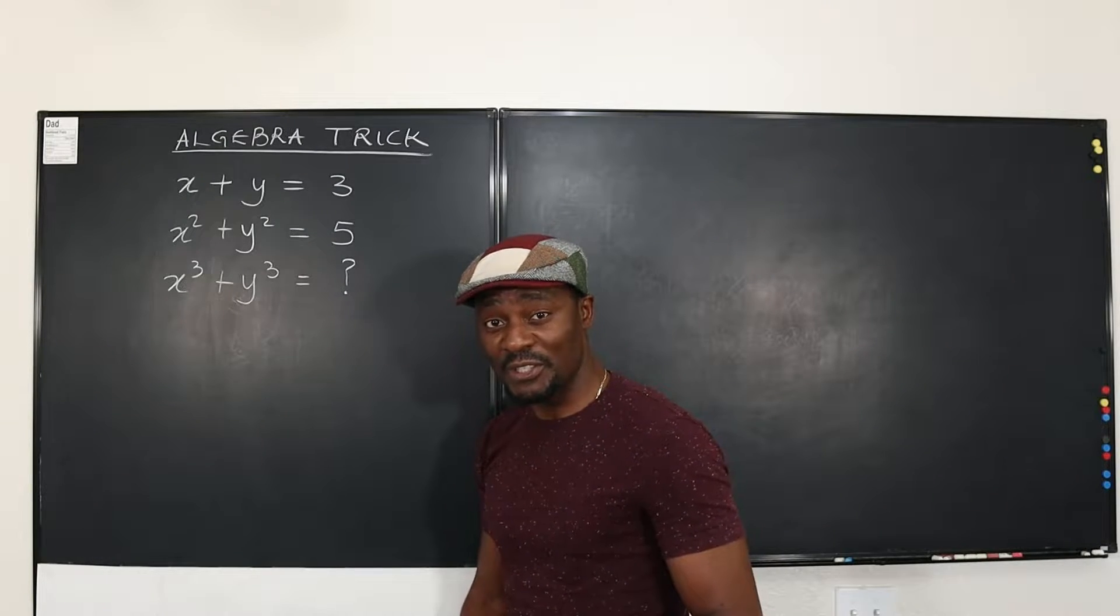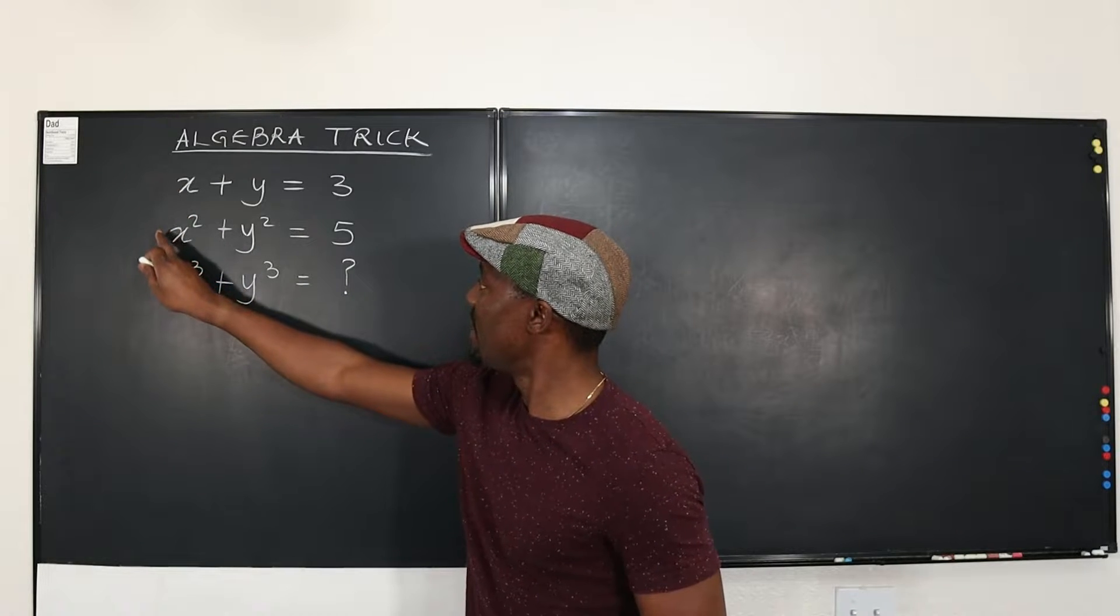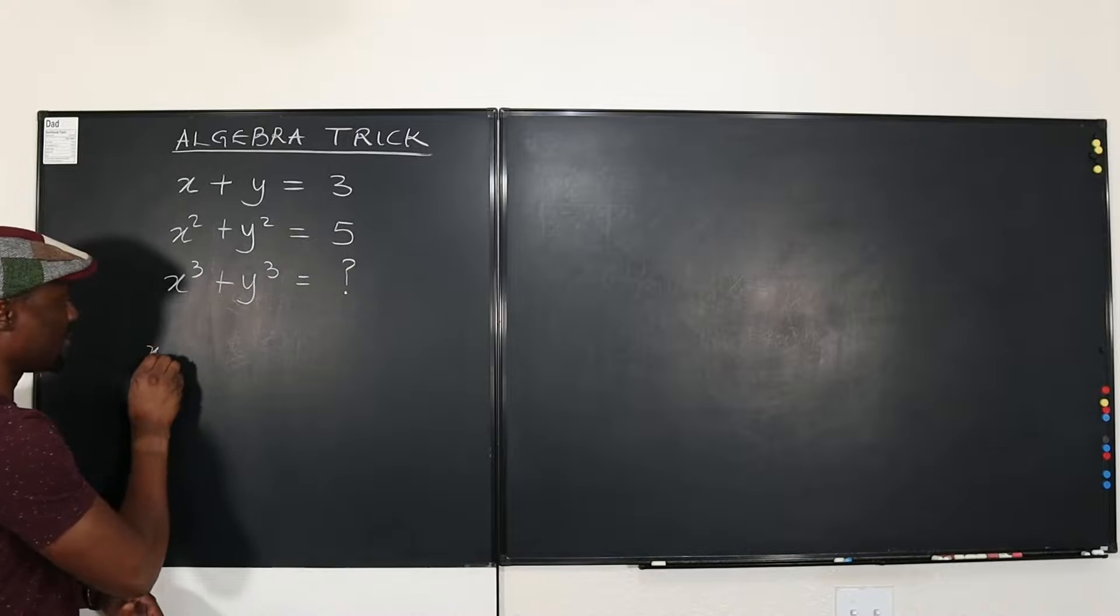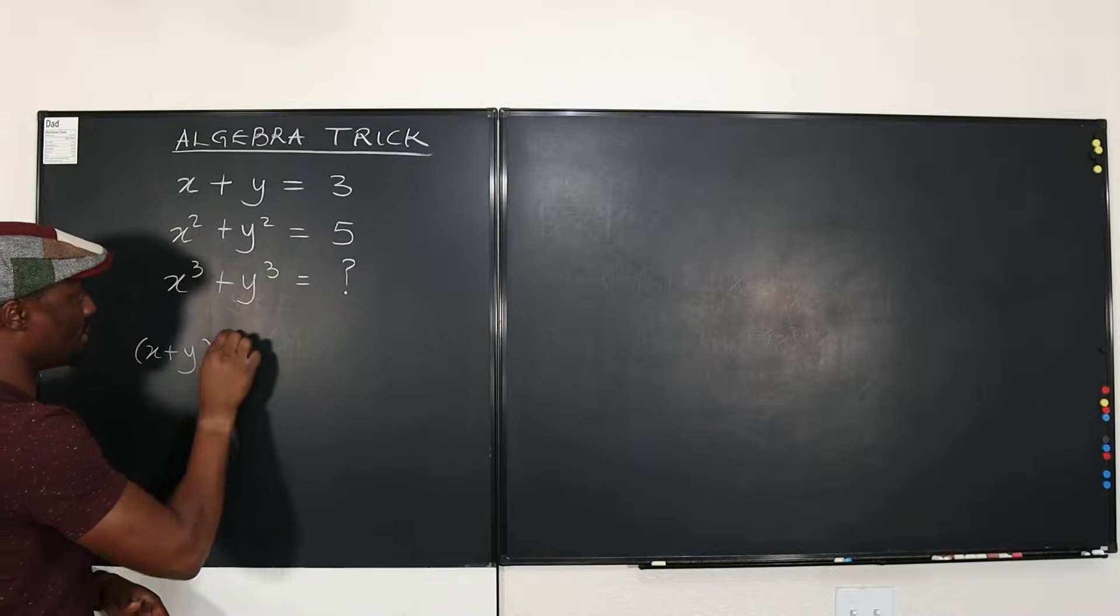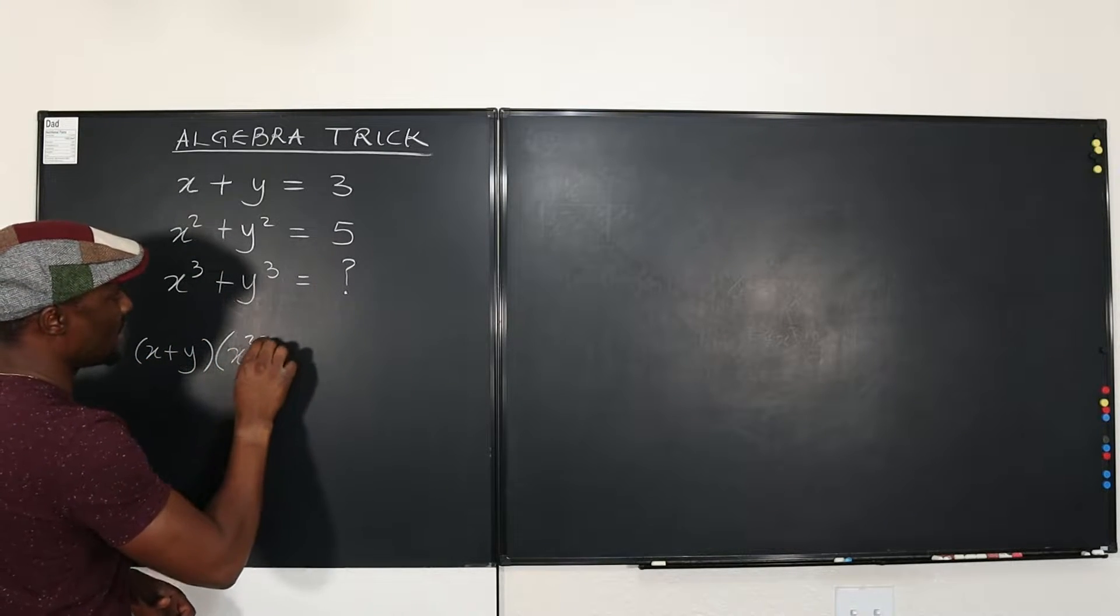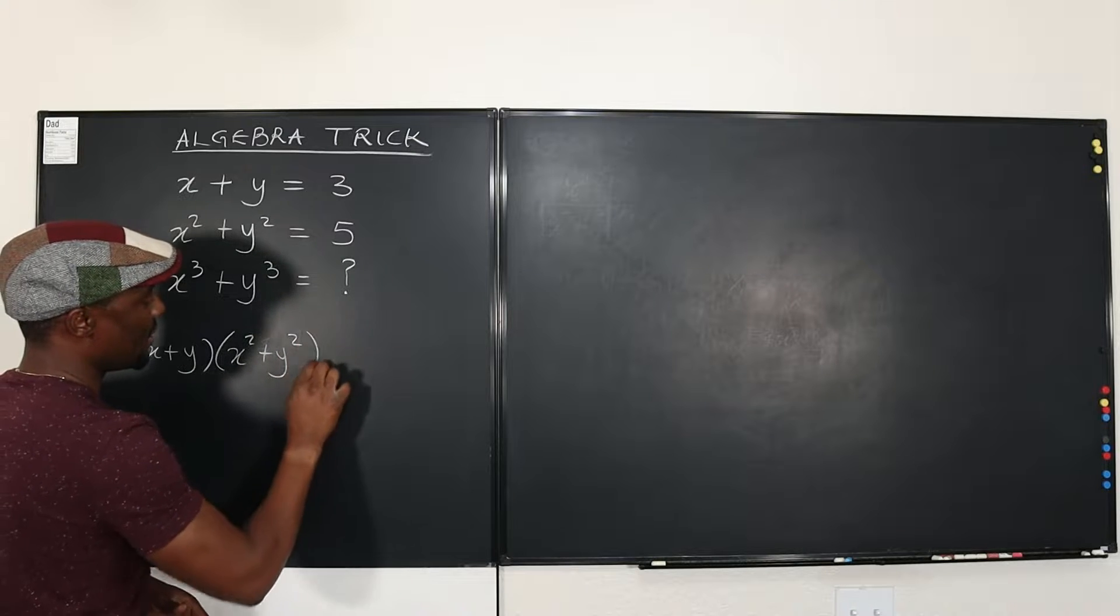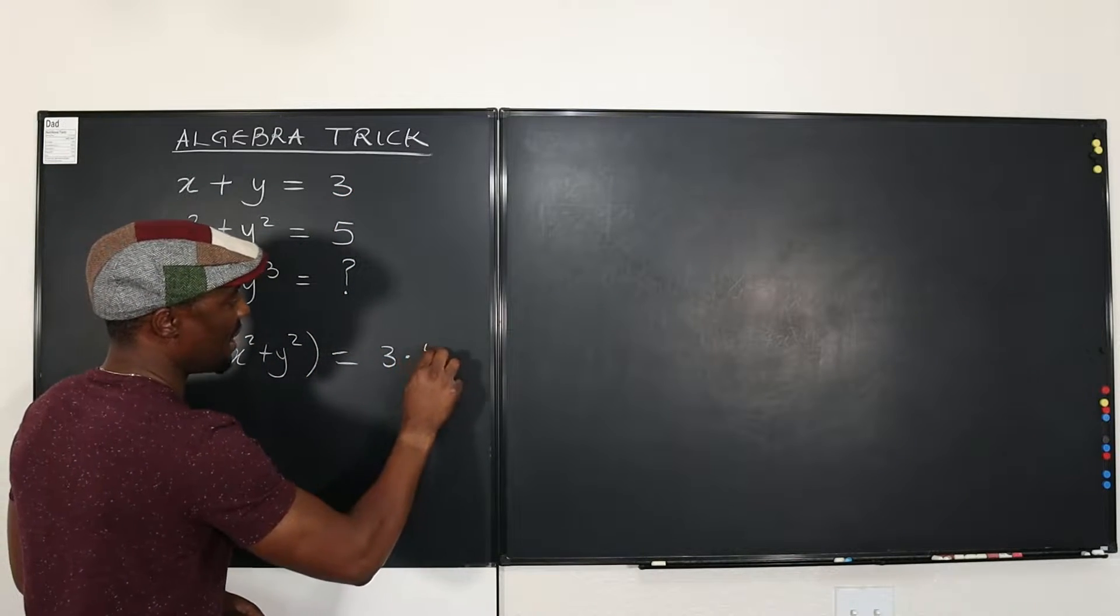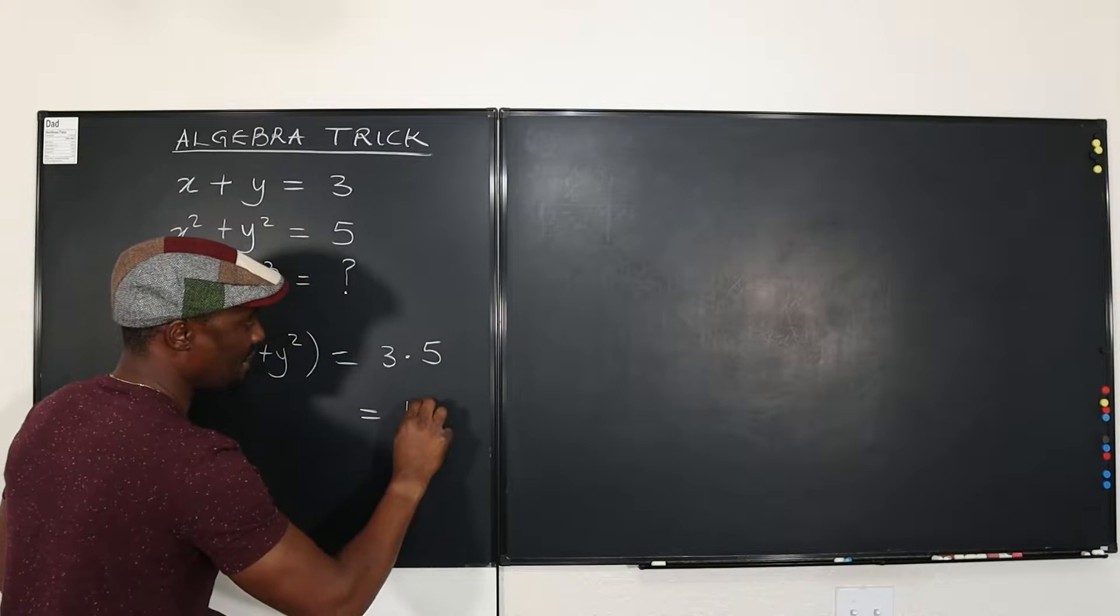So the first thing I'm going to do is multiply this by this and see what I'm going to get. Okay, so we're going to say (X + Y) multiplied by (X² + Y²). Okay, must be equal to three times five, three times five.